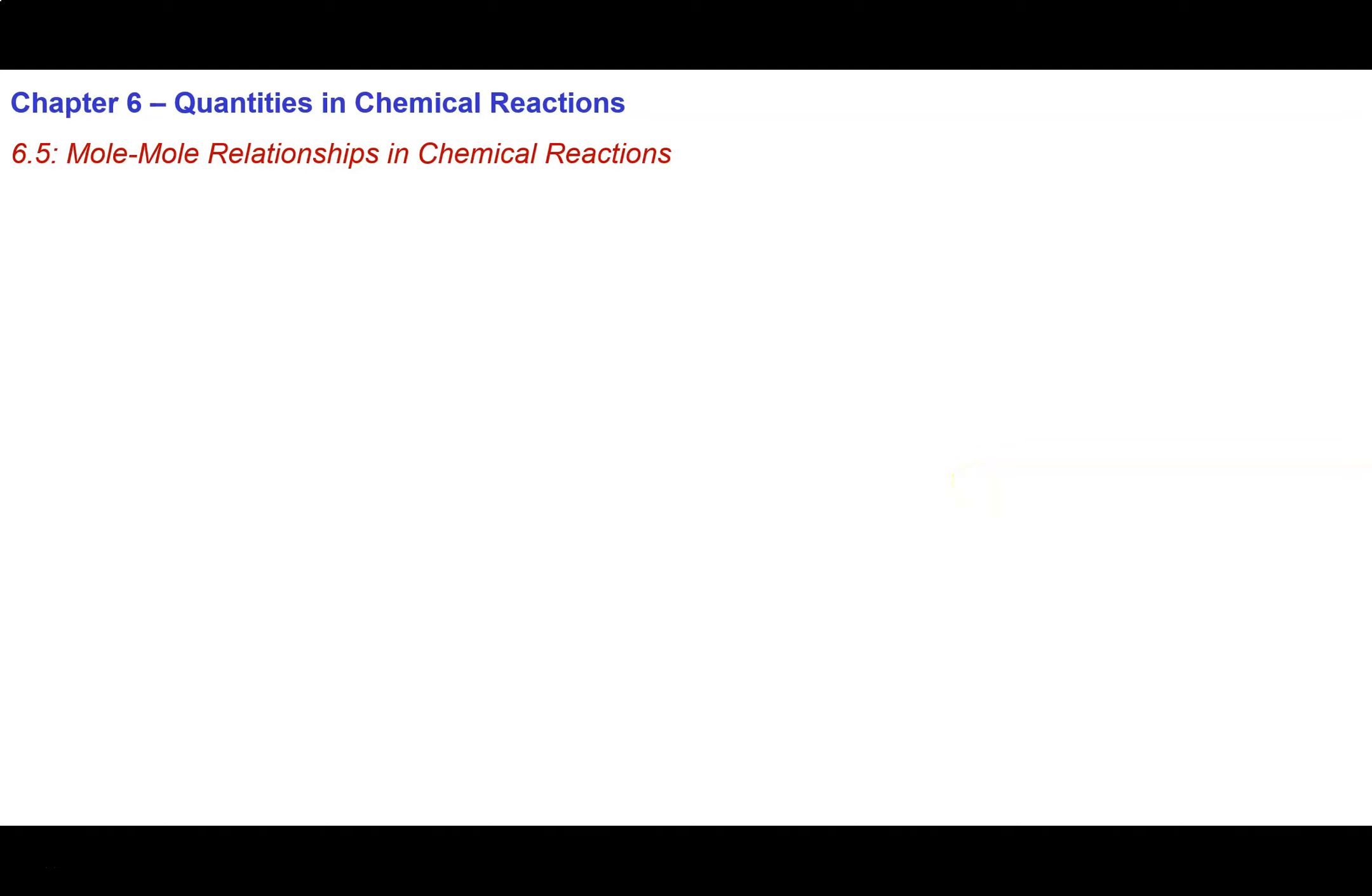So in section 6.5 we just elaborate the mole to mole relationships that are indicated when we have a balanced chemical equation. So we've already seen this content before, we're just really stressing its importance here.